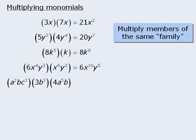Finally, in the last example, the product of the coefficients is 12. The product of a squared and a to the power of 5 is a to the power of 7. The product of b cubed and b is b to the power of 5. And finally, the product of c cubed times no other c's is equal to c cubed.